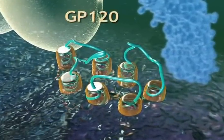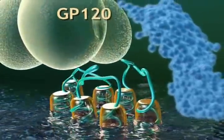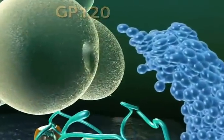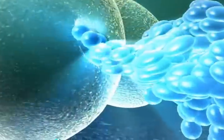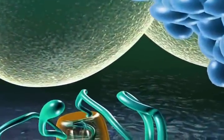The GP120 protein of HIV first attaches to the CD4 receptor on the cell membrane. Only then can the virus bind with the co-receptor.